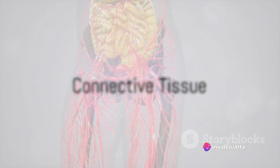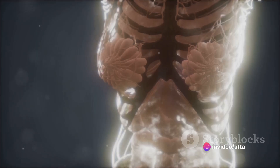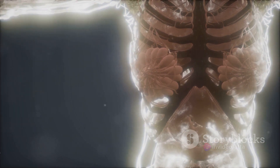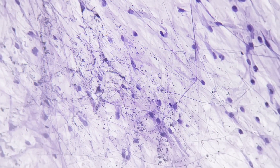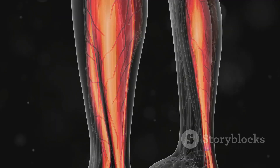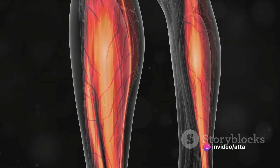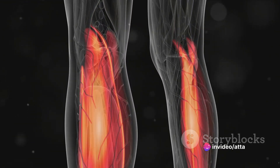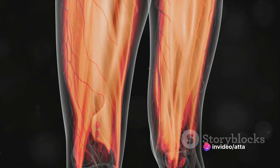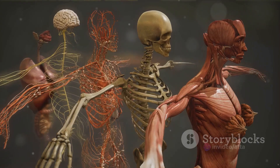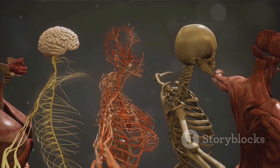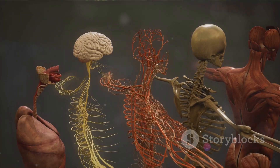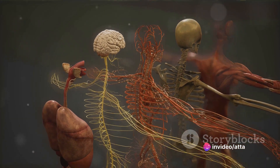Next, we have connective tissue, the body's most abundant and widely distributed tissue. It supports, binds, or separates other tissues or organs. Loose connective tissue acts like a soft packing material between various organs. Dense connective tissue, as the name suggests, is denser and provides strength and flexibility in areas like tendons and ligaments. Then there's cartilage, bone, blood, and more, each with a specific role and structure, making connective tissue a versatile player in our body's functioning.